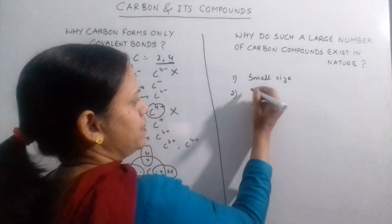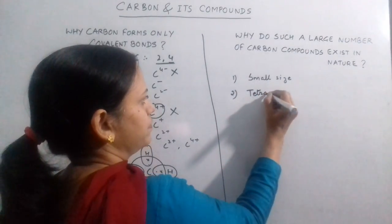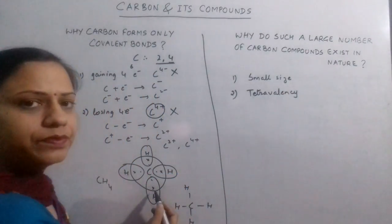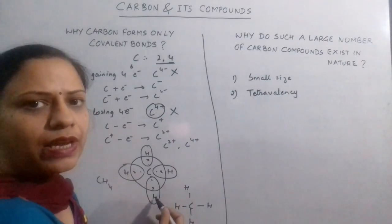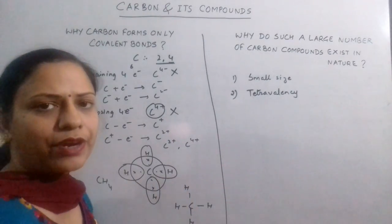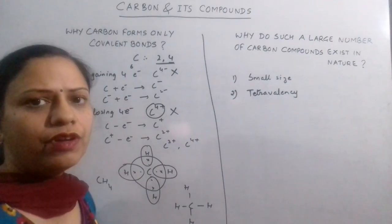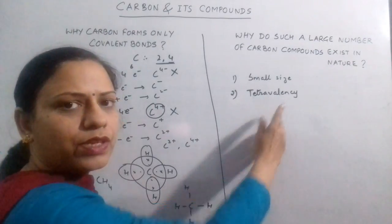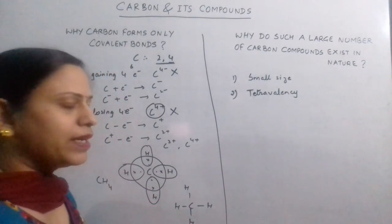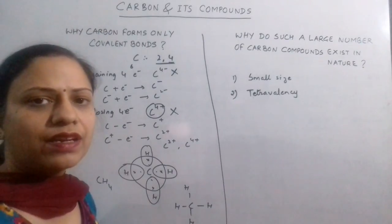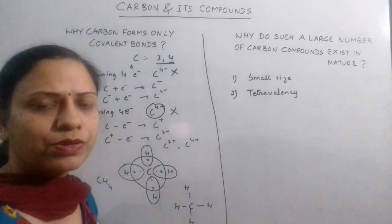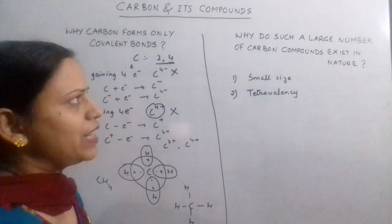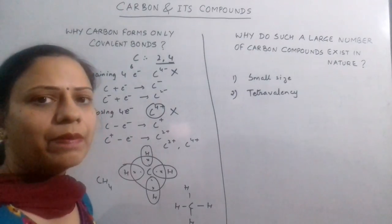The second property is tetravalency. As we saw, carbon has 4 electrons in its outermost shell. It has the property of sharing those 4 electrons which results in the formation of 4 bonds. Tetra means 4, valency means 4 because it has a valency of 4. So carbon forms 4 bonds. The bonds may be single, double, or triple bonds, but carbon always forms 4 bonds. This is the second property which enables the existence of a large number of carbon compounds.